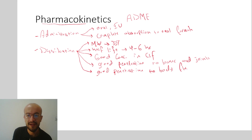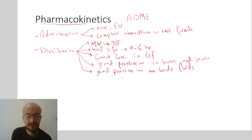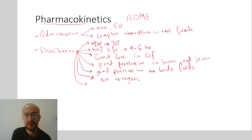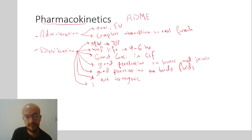Linezolid has good penetration to all body fluids — this is typical of low molecular weight antibiotics, which generally have excellent penetration through all types of barriers in the body. Linezolid also crosses the placenta but is not teratogenic. It crosses into breast milk and can cause diarrhea in the nursing child by killing the bacterial flora of the baby's intestine.